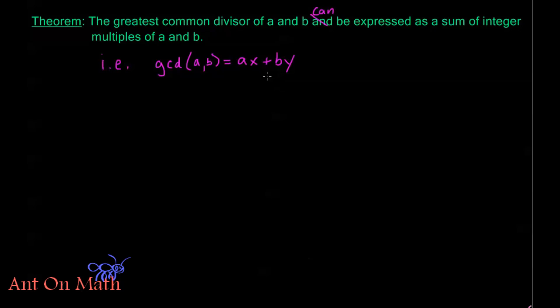X and Y don't need to be positive integers. At least one of them is going to need to be negative in general, but we can always express it as this linear combination. We'll see why this is useful later, but let's take a look at how we would find this linear combination.